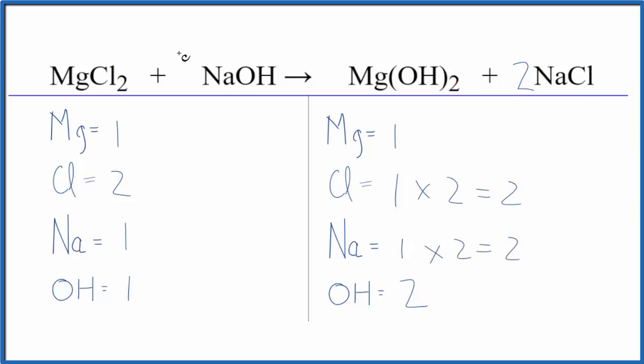Let's fix the sodiums. If we put a coefficient of two here in front of the NaOH, one times two, that gives us two sodium atoms. We have our hydroxide, two times this one hydroxide. That'll give us two of those. We're done. This equation is balanced.